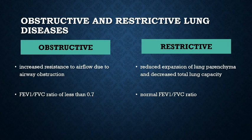Now we will discuss obstructive and restrictive lung diseases. Obstructive lung diseases are characterized by an increase in resistance to airflow due to partial or complete obstruction at any level from the trachea and larger bronchi to the terminal and respiratory bronchioles. The distinction between these chronic non-infectious diffuse pulmonary diseases is based primarily on pulmonary function tests. An FEV1 to FVC ratio of less than 0.7 generally indicates airway obstruction. In contrast, restrictive diseases are associated with proportionate decreases in both total lung capacity and FEV1, leading to a normal FEV1 to FVC ratio.